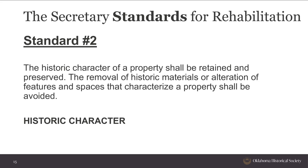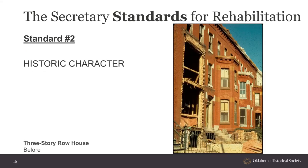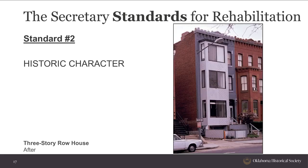Standard number two: The historic character of a property shall be retained and preserved. The removal of historic materials or alterations of features and spaces that characterize a property shall be avoided. These are what we call character-defining features and are often indicative of the building's architectural style. The historic character of one row house underwent immense damage when the two-story bay was removed from the facade and a new, incompatible, three-story bay was added. This does not meet Standard 2.